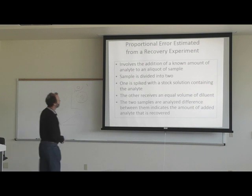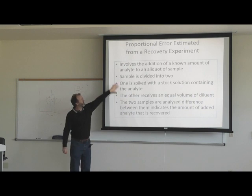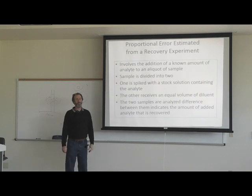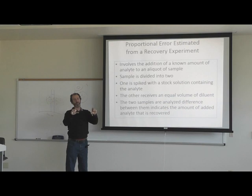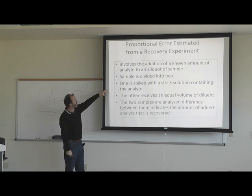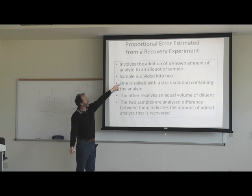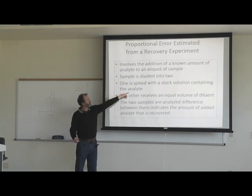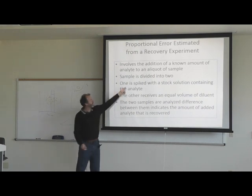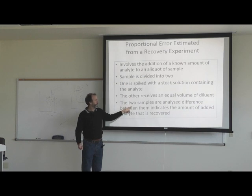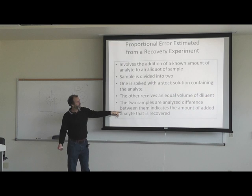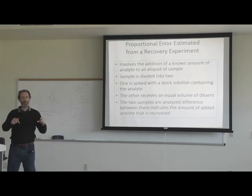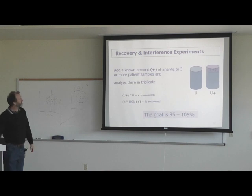Proportional errors estimated from a recovery experiment: you have two aliquots of the same sample — one is spiked with a known amount of analyte, the other receives equal volume of diluent. Both are analyzed. The difference indicates the amount of added analyte recovered. You add a known amount to three or more patient samples, analyze in triplicate. Percent recovery equals the recovered amount times 100 divided by the amount added, and the goal is between 95 and 105%.